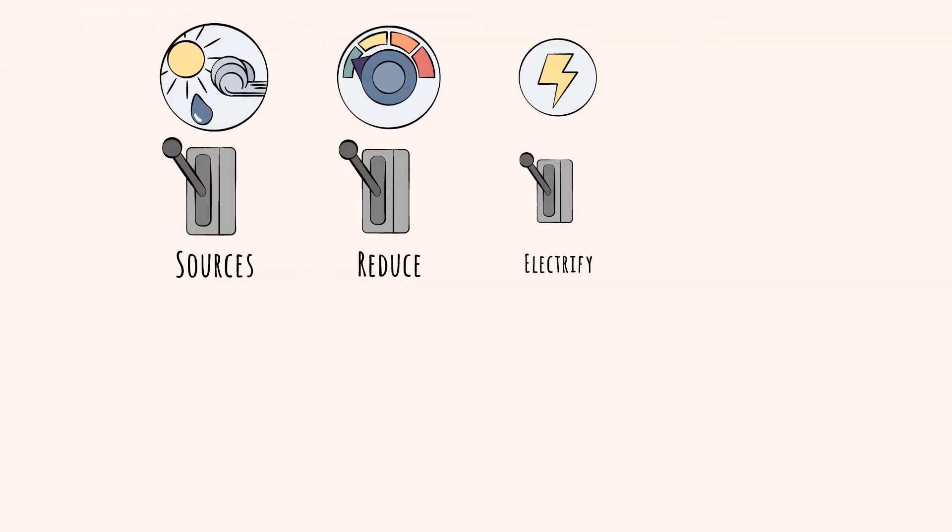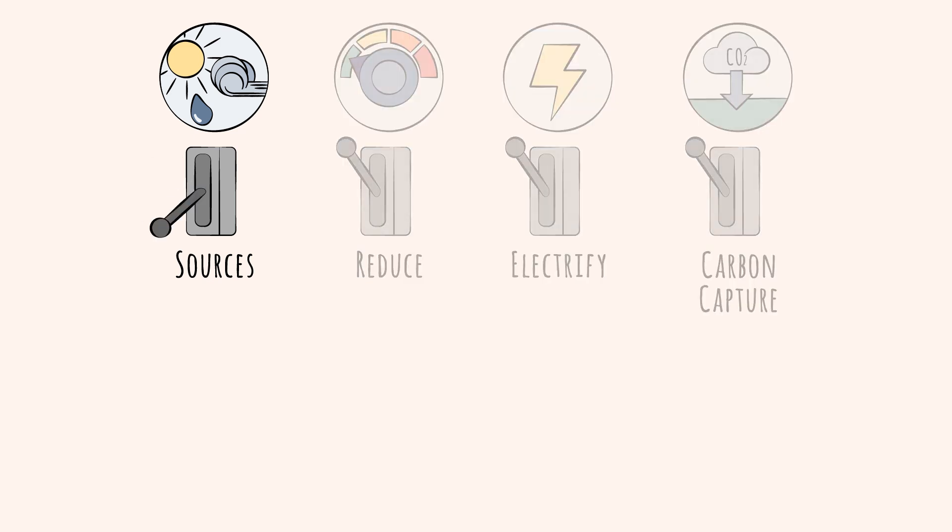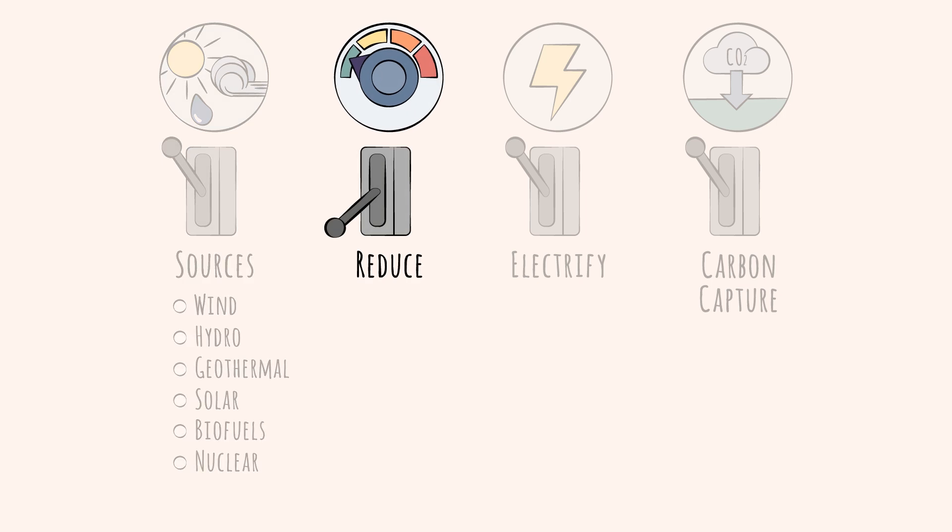Remember our four levers for reducing atmospheric carbon. The first was to shift to lower-emission sources. These include the electricity-based renewables: wind, hydro, geothermal, and solar; the fuel-based renewables: biofuels; and nuclear, a low-emission but non-renewable source. The second lever was to use less energy. Next, let's look now at the various ways energy is consumed.